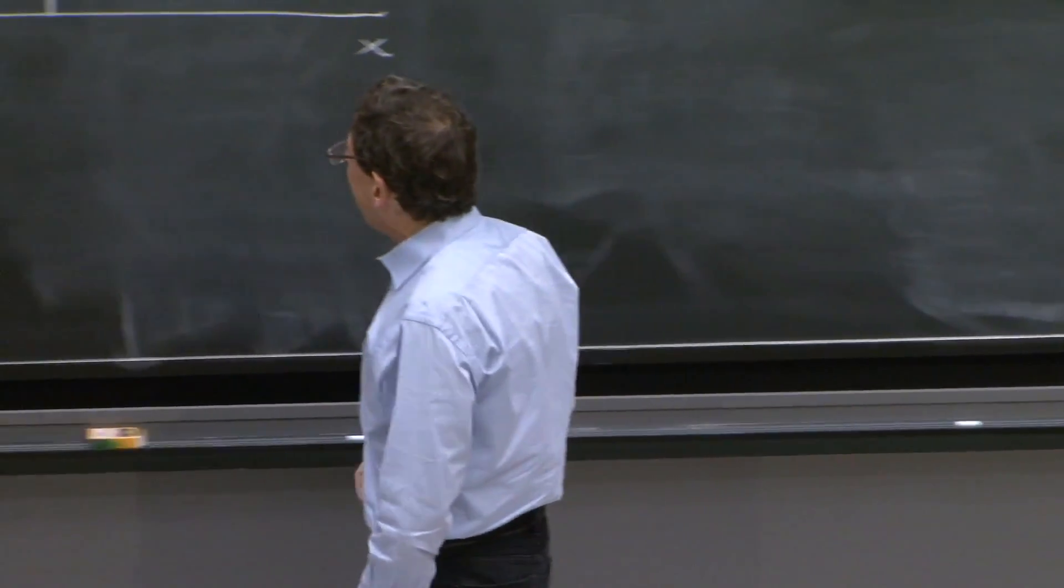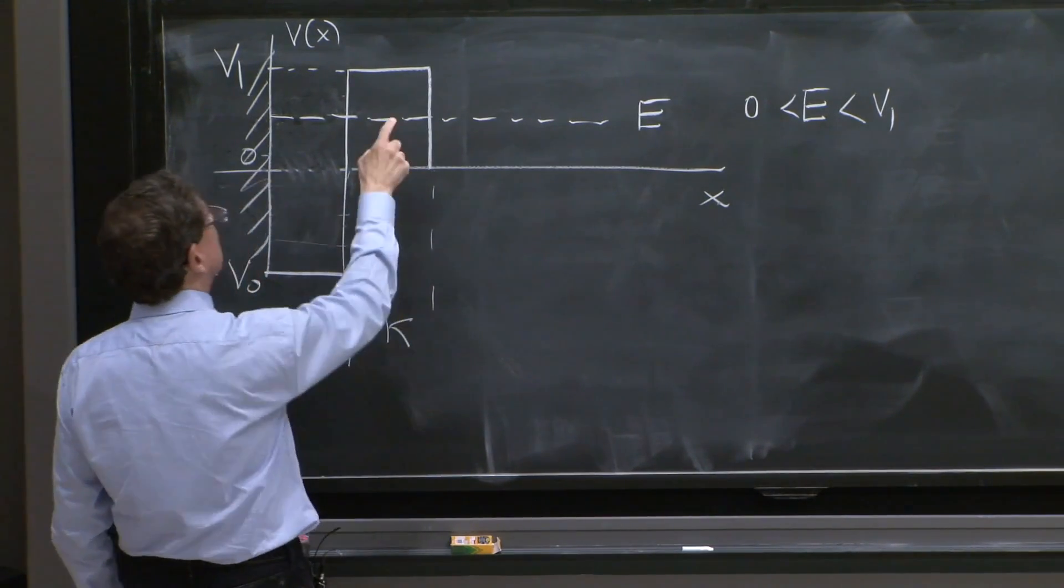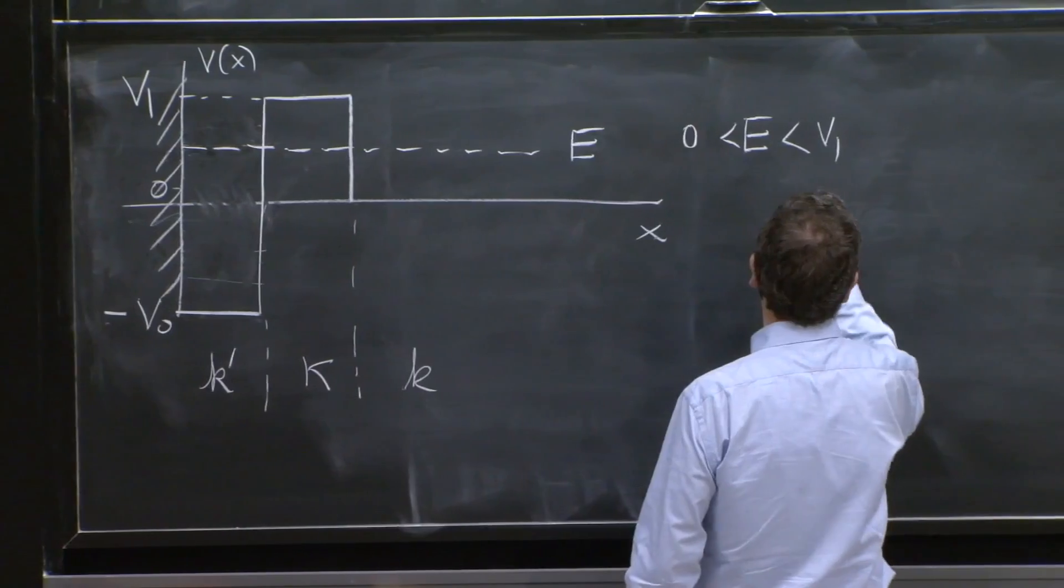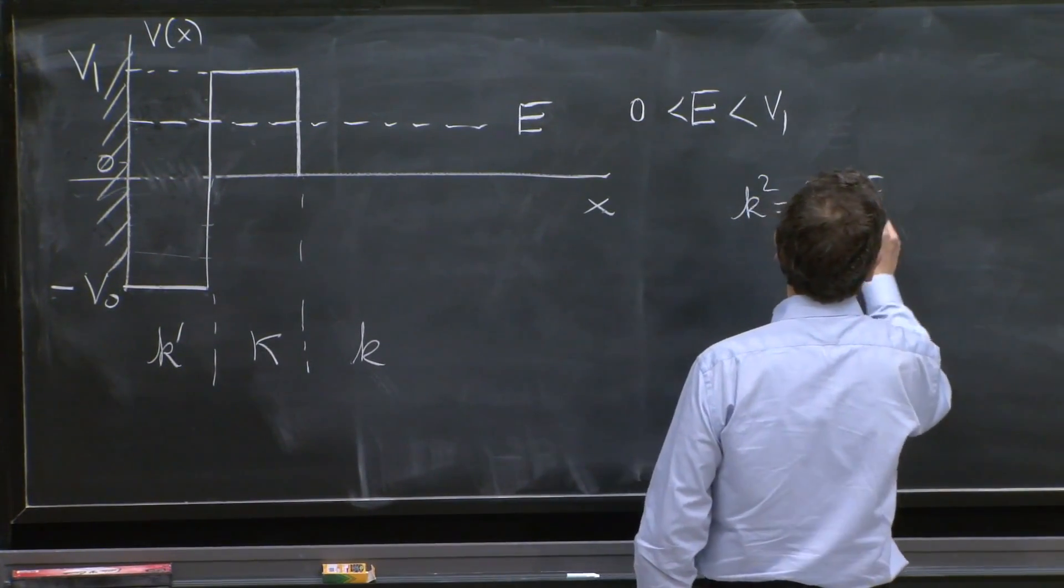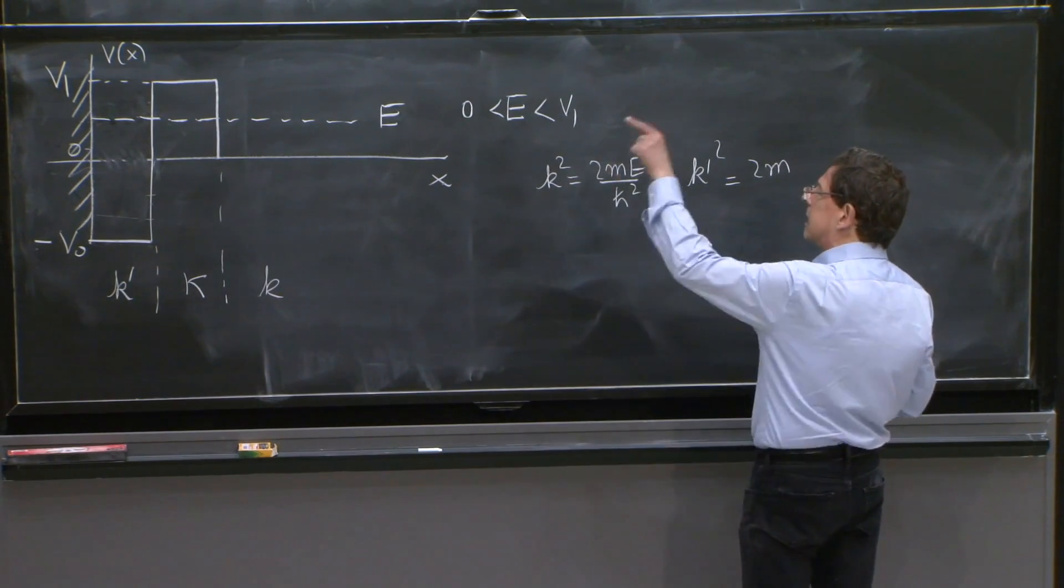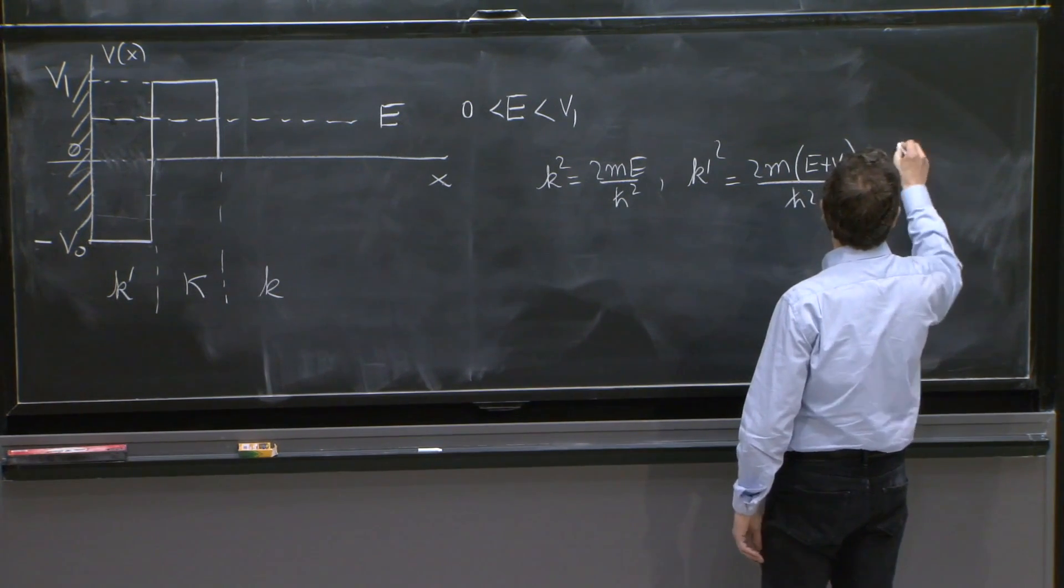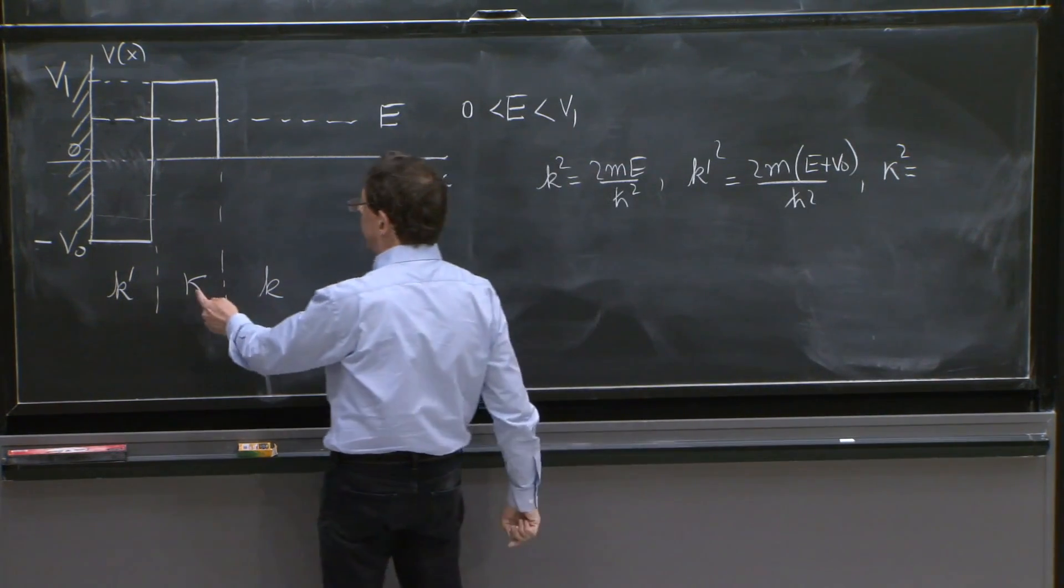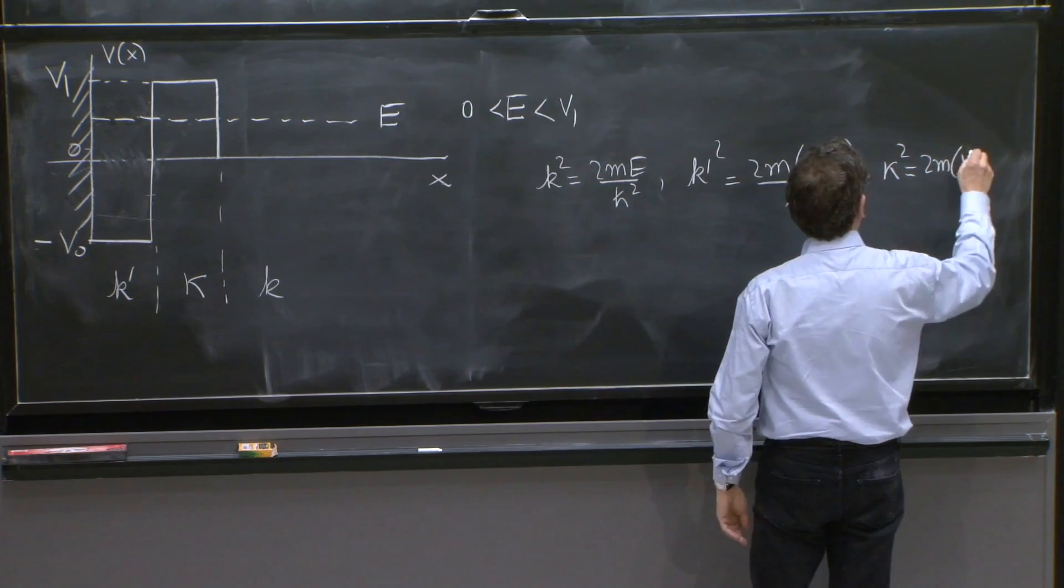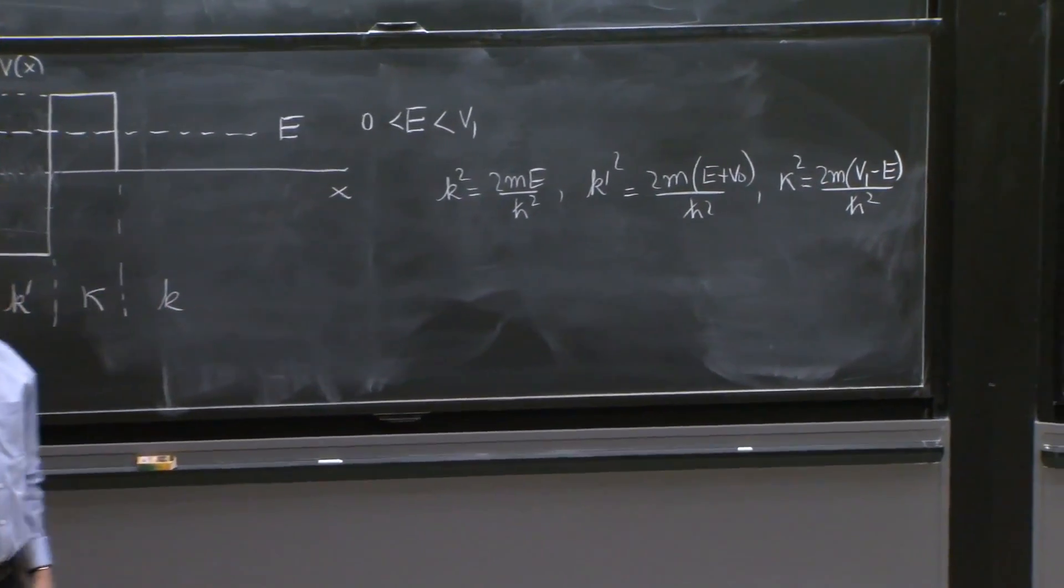So let's put k, so let's call this k prime, the wave number in this area, kappa here because it's a forbidden region, and k over here as usual. So k² = 2mE/ℏ². k'² = 2m(E + V₀)/ℏ². And kappa² is the energy differential between V₁ and E, so 2m(V₁ - E)/ℏ². All of these three numbers are positive, and they are the relevant constants to write wave functions.